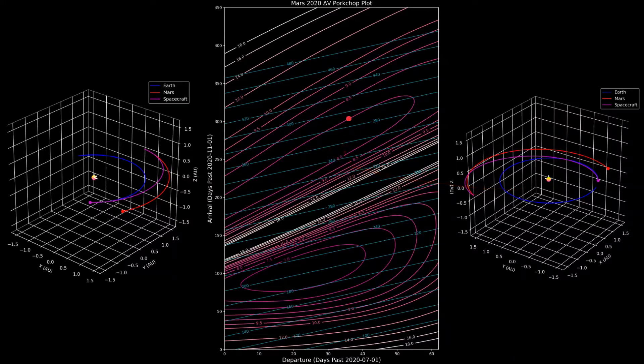Now these delta V values are calculated from two maneuvers, which is an Earth departure burn and a Mars arrival burn.